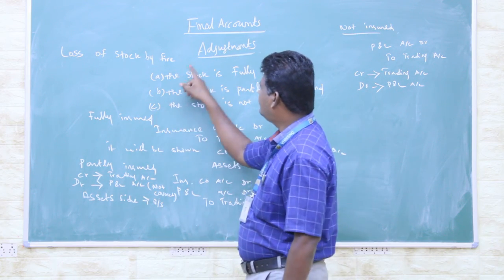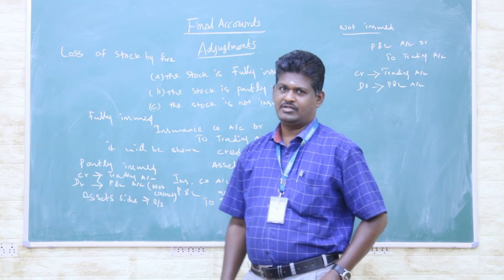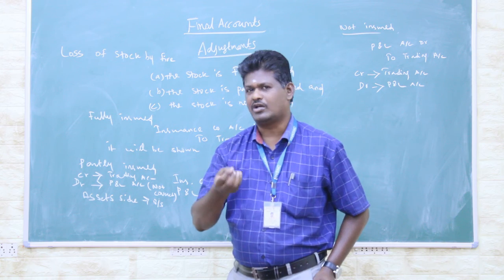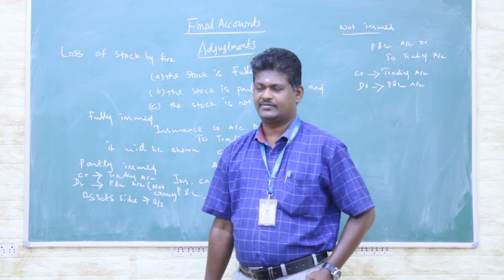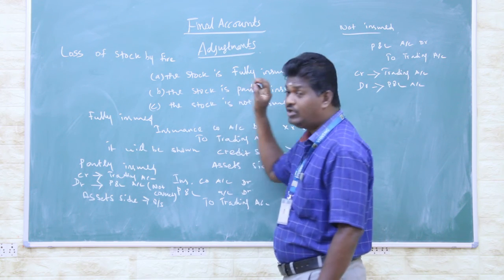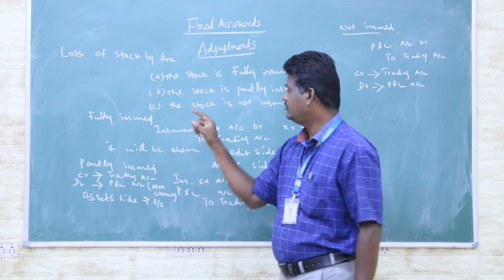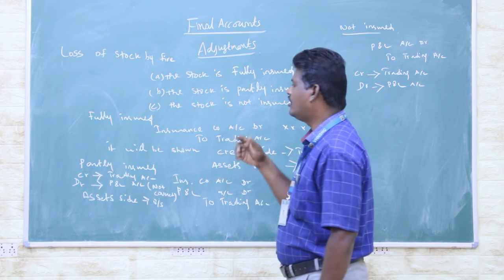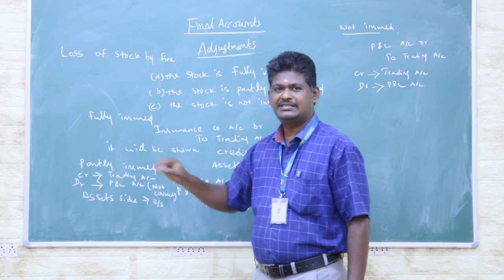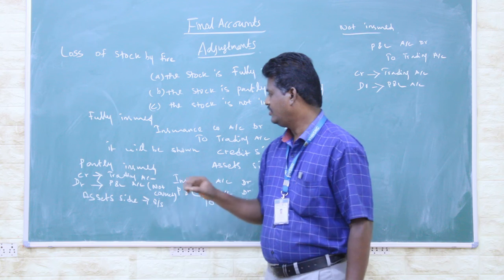The loss of stock by fire. The loss of stock due to a fire accident. We classify it into three categories. One is the stock is fully insured. Another one is the stock is partly insured. The last one is the stock is not insured. In each situation we make some adjustment with the trading account.